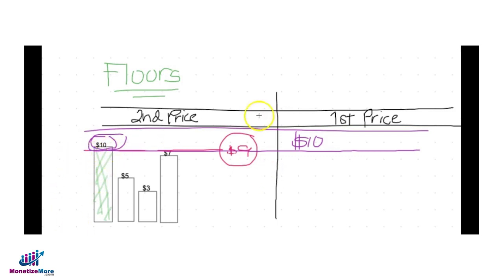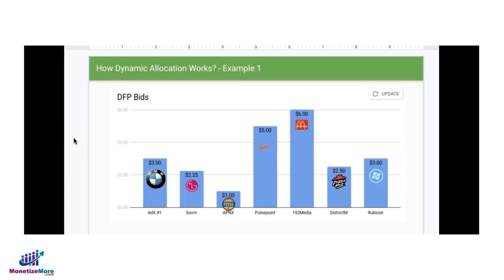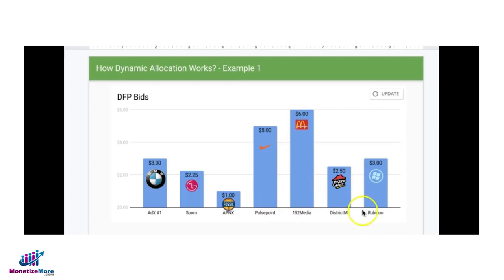What if Ad Exchange doesn't win the auction? Let's say the highest bid available from Ad Exchange was only $3, while managed demand and header bidding in DFP have higher bids available. Ad Exchange won't win, so the ad request goes to DFP instead, and whoever is the highest paying ad network or bidder gets to serve the ad.